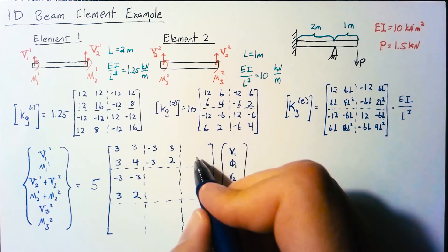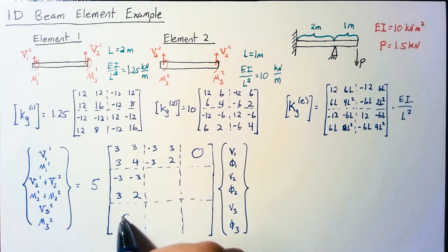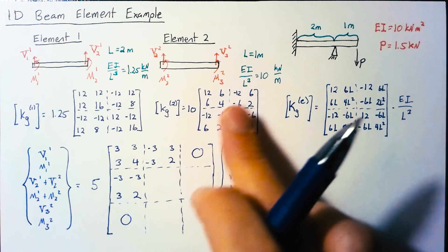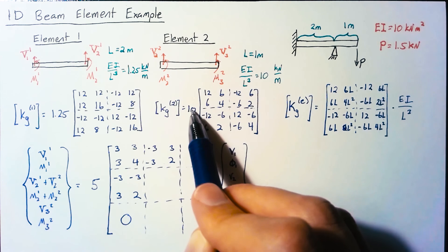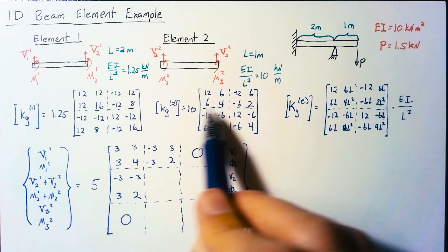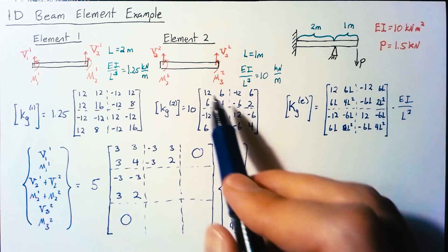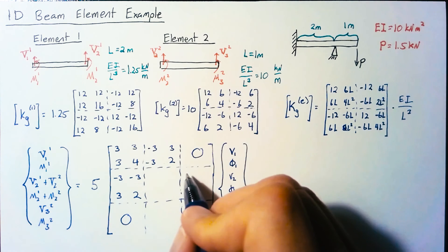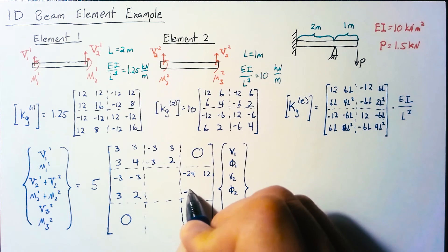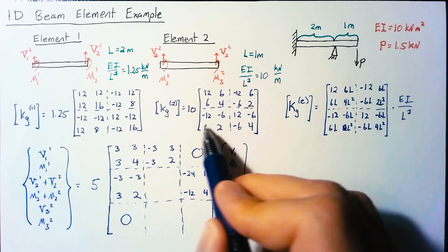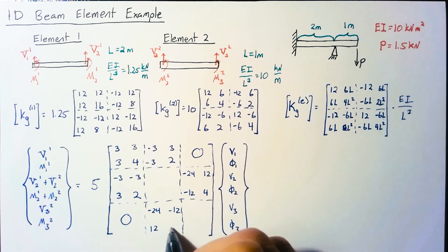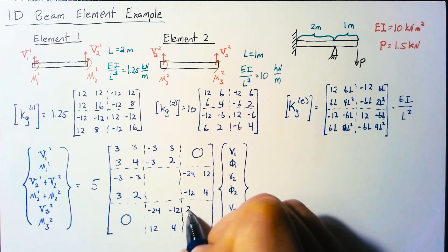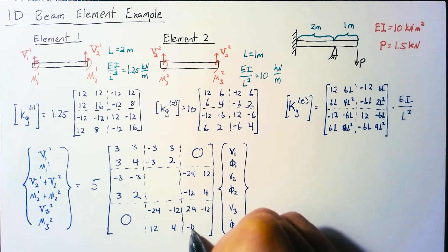Looking at element 2, we distribute the factor of 2 to the entire matrix. This submatrix is -24, 12, -12, 4. Bottom submatrices are -24, -12, 12, 4 and 24, -12, -12, 8.